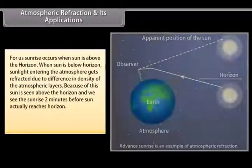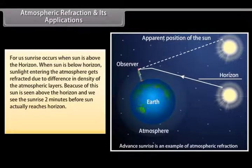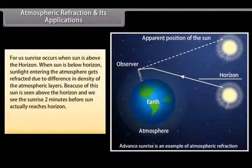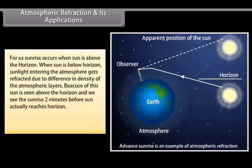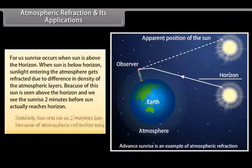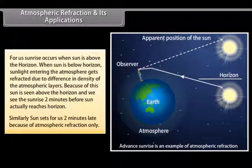Sunrise and sunset effects due to atmospheric refraction: Sunrise occurs for us when the sun is above the horizon. When the sun is actually below the horizon, sunlight entering the atmosphere gets refracted due to difference in density of atmospheric layers, causing the sun to appear above the horizon. We therefore see the sunrise about two minutes before the sun actually reaches the horizon, and similarly the sun sets for us about two minutes late, because of atmospheric refraction.